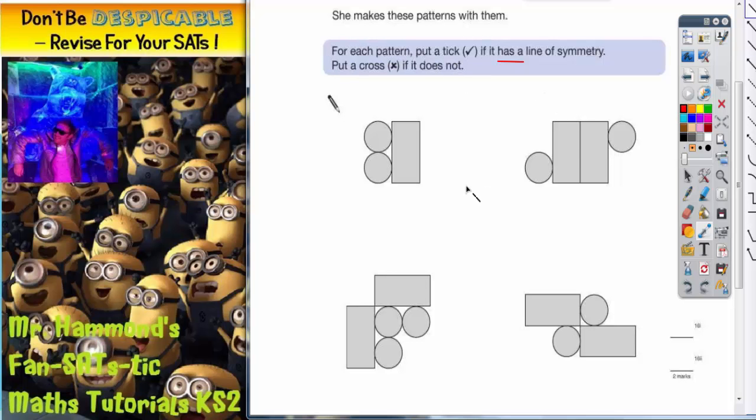So we're checking for symmetry. Easiest thing to do here is to put your hand up and ask your teacher for a mirror if you haven't got one. The idea is that you'll experiment by placing your mirror on the shape to check for a line of symmetry.